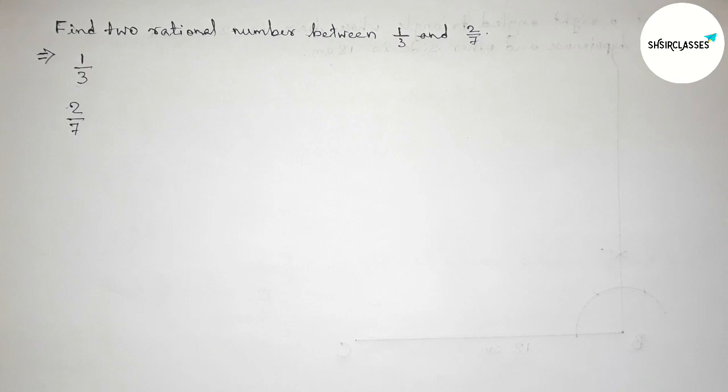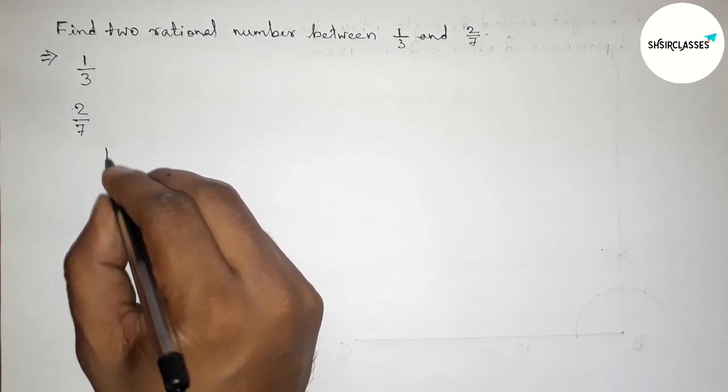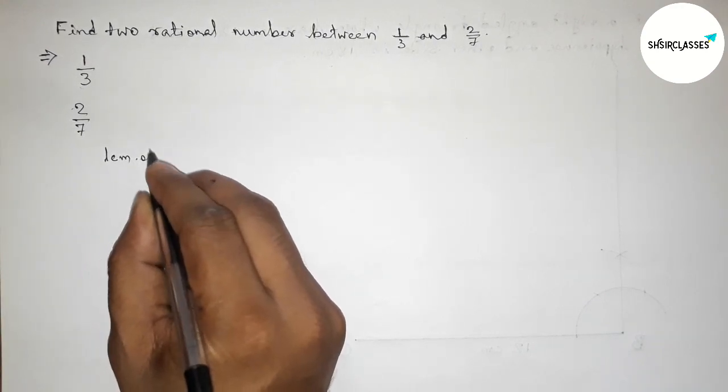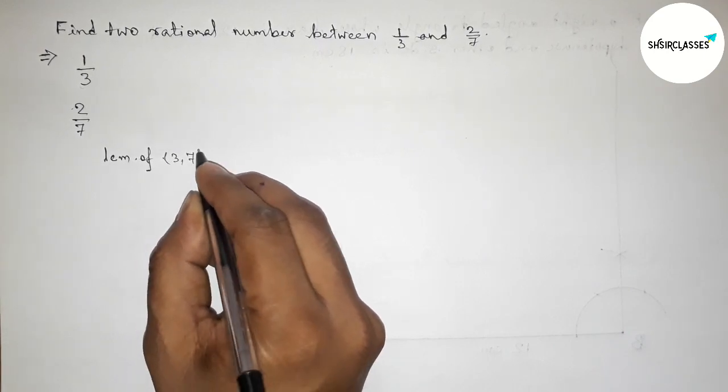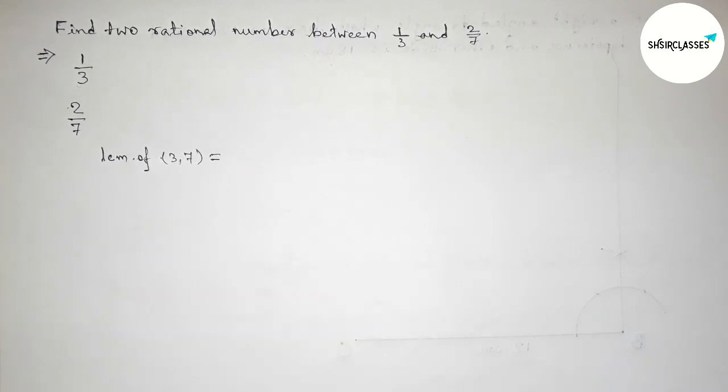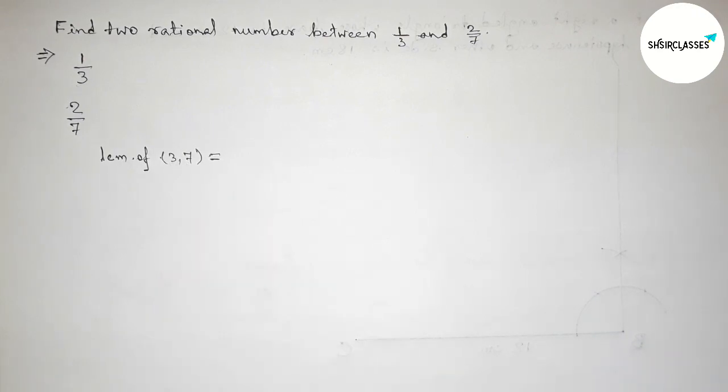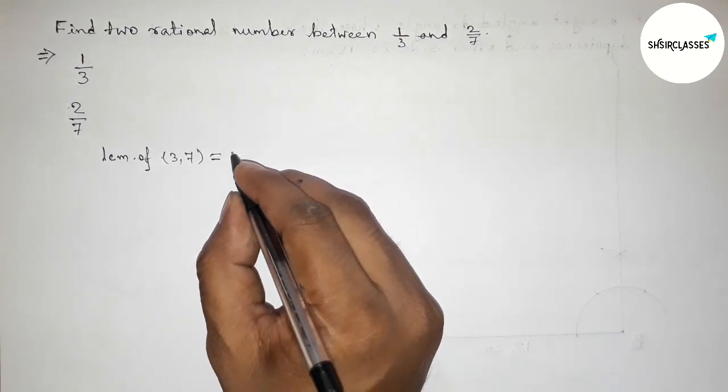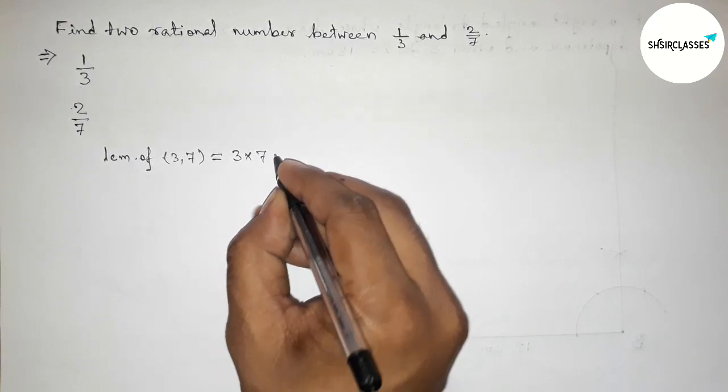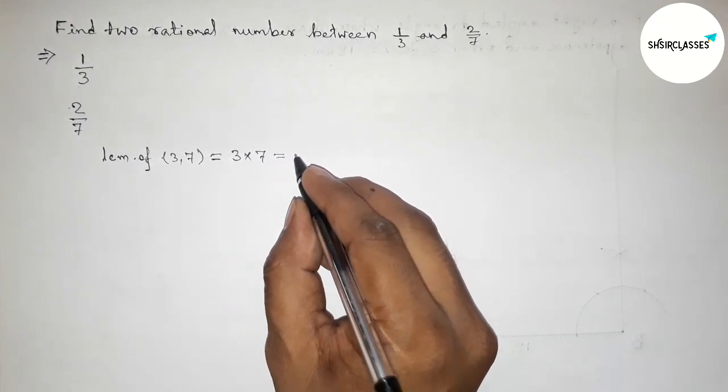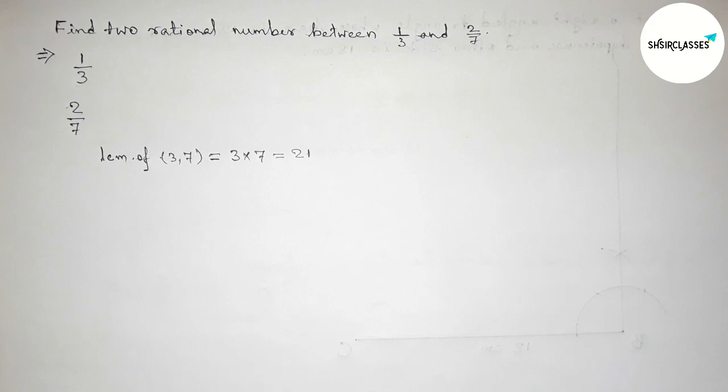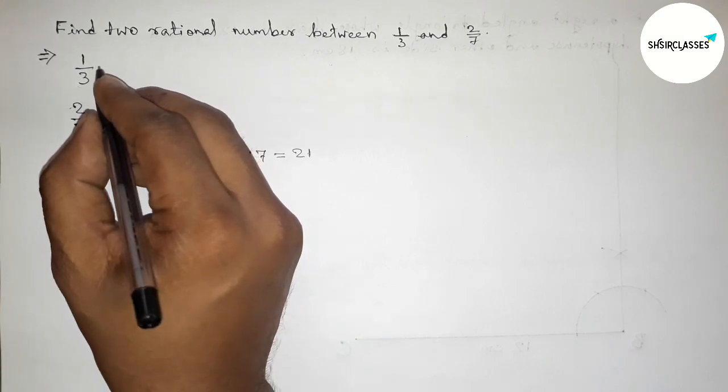So first we have to make the same denominator. Now first finding LCM of 3 and 7. Here 3 and 7 are prime to each other, so their LCM will be their product, so 3 × 7 = 21. We have to make both the denominators equal to 21.